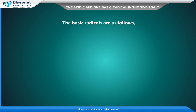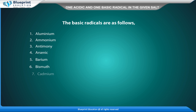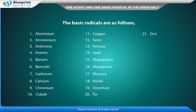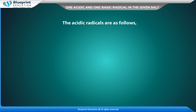The basic radicals are as follows: aluminium, ammonium, antimony, arsenic, barium, bismuth, cadmium, calcium, chromium, cobalt, copper, ferric, ferrous, lead, magnesium, manganese, mercury, nickel, strontium, tin, zinc, and silver.